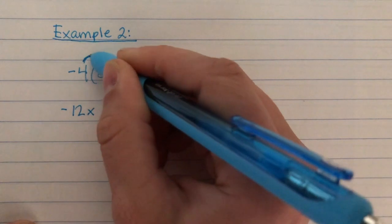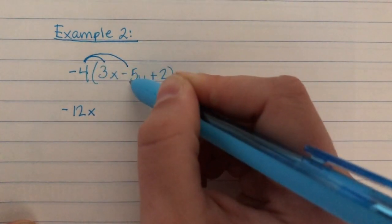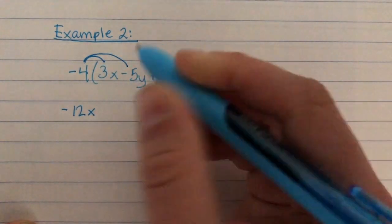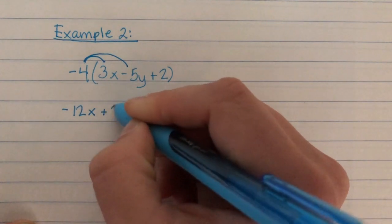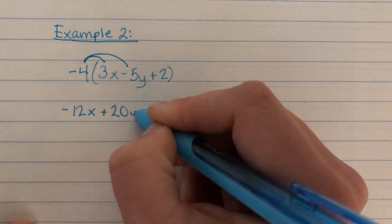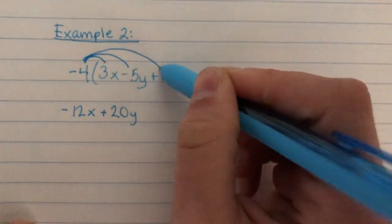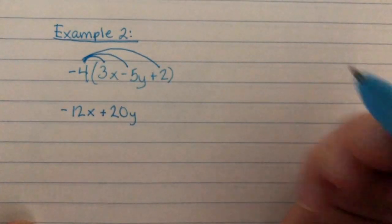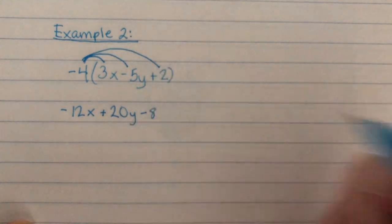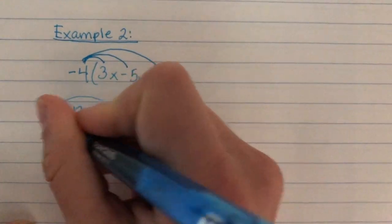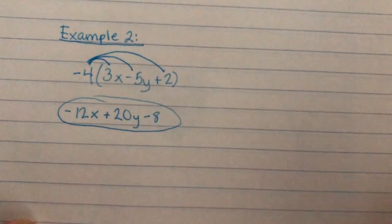We can then take negative 4 times negative 5, because there's a negative in front of our 5y. The negatives cancel out, and that would be plus 20 with a y. We also need to do this for our final term. Negative 4 times 2 would make a negative 8. And there we would have our simplified expression.